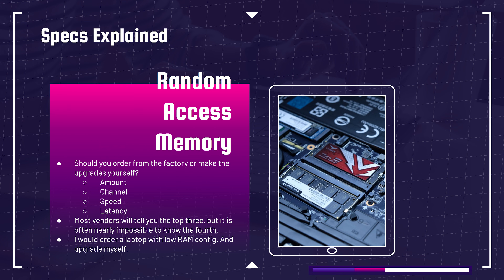Next, we look at the speed — so 2400 megahertz versus 3200 megahertz. And finally, we look at the latency. I have these listed in order of importance: the amount, then the channel, then the speed, then the latency — each really makes a big difference.